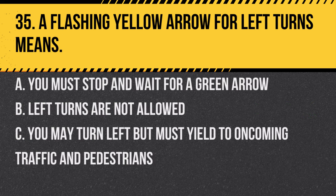Question 35. A flashing yellow arrow for left turns means: a. You must stop and wait for a green arrow. b. Left turns are not allowed. c. You may turn left but must yield to oncoming traffic and pedestrians. Answer: c. You may turn left but must yield to oncoming traffic and pedestrians. The flashing yellow arrow indicates caution.